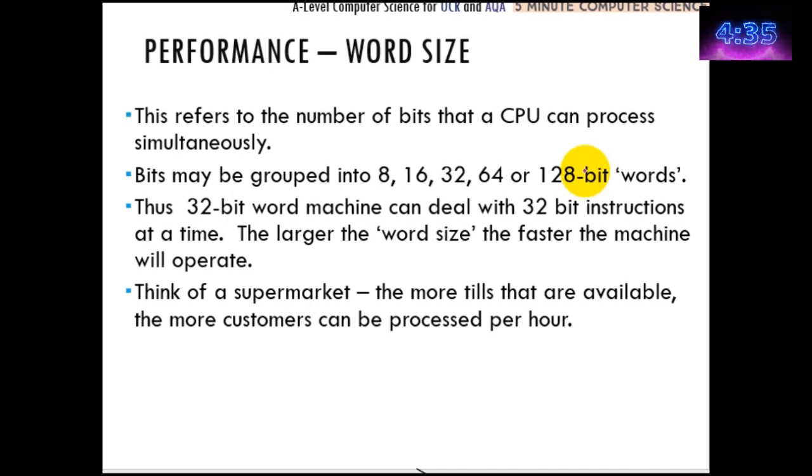Say for example you think of a supermarket. A supermarket might have a hundred customers and you might have 10 tills. So if you've got 10 tills and 100 customers, 100 divided by 10 means that 10 customers can go to each till. And let's say it takes a minute per customer, well that means that in 10 minutes we're all done.